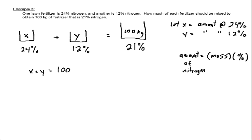So to find the amount of nitrogen in the first one, we take the 24 and multiply it by the mass. To find the amount of nitrogen in the second one, we take the percentage of nitrogen and multiply it by the mass.